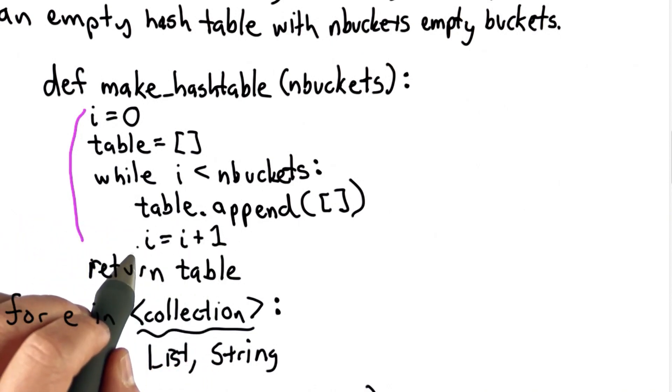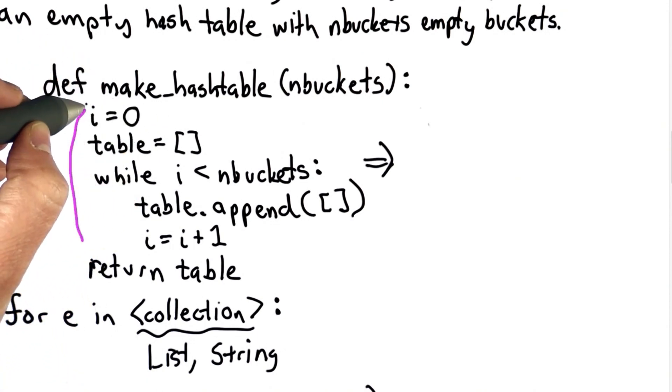This is a common mistake, and when we forget to increment the variable, the loop's just going to run forever. So if you can write our while loops as for loops, that's usually a good idea. So a better way to define make_hashtable is to use the for loop.